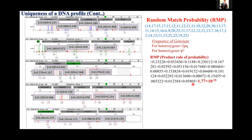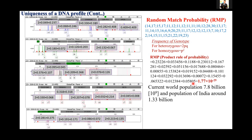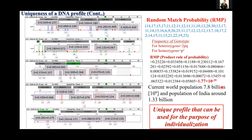Imagine how small this value is — 1.77 × 10⁻²⁹. The current world population is around 7.8 billion, that is at a magnitude of 10⁹. The current Indian population is around 1.3 billion. So imagine how discriminatory a DNA profile can be. By considering all these statistical probabilities, we have achieved a value that matches nowhere to the current world or Indian population combined. So this is a unique profile, used for the purpose of individualization — achievable only by autosomal STR analysis.